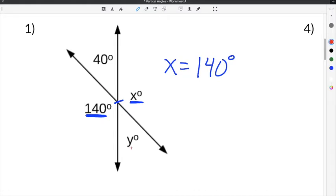We can do the same thing for angle y. So we don't know angle y, but we do know it's vertical with 40 degrees. And because they're vertical, that means that they're exactly the same. So if this is 40, that means that angle y also has to be 40 degrees.